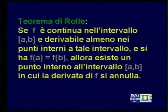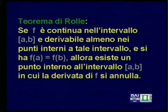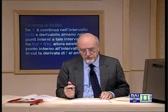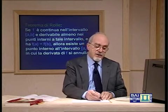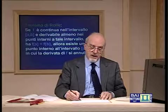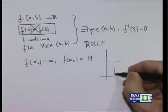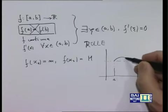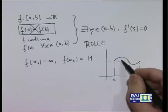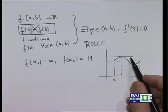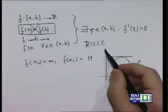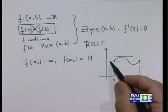Andiamo a rileggere il teorema di Rolle: se f è continua nell'intervallo [a, b], limitato e chiuso, derivabile almeno nei punti interni e assume valori uguali negli estremi, allora esiste un punto interno in cui la derivata prima si annulla — in parole povere, esiste un punto critico. Ora, dire che la derivata prima è nulla è tanto come dire che la retta tangente è disposta orizzontalmente, dunque è parallela all'asse delle ascisse, ma è parallela anche alla secante che passa per i punti (a, f(a)) e (b, f(b)).